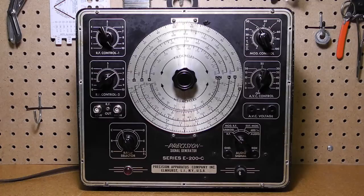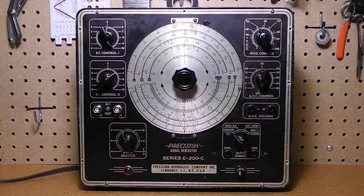RF output can be unmodulated or amplitude modulated with a 400 Hz sine wave with adjustable modulation level marked in percent modulation. Modulation can also come from an external audio input source.